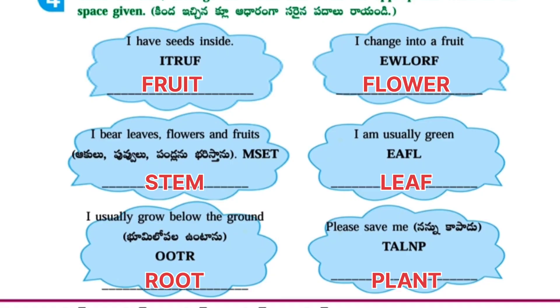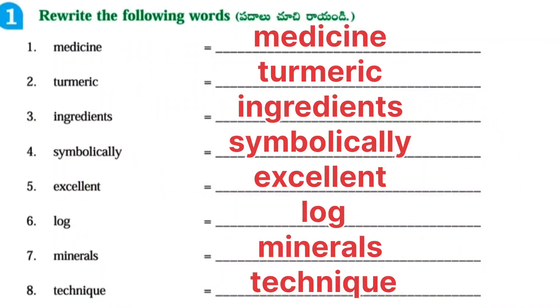Please save me — that is plant. Next, Worksheet number six. Concept: Plants — Gift of Nature. Rewrite the following words: Medicine, turmeric, ingredients, symbolically, excellent, log, minerals, and technique.